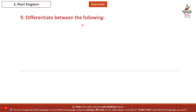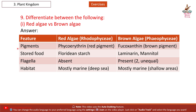Question 9, First: Red algae versus brown algae. Feature — Pigments: Red algae (Rhodophyceae) have phycoerythrin, a red pigment; Brown algae (Phaeophyceae) have fucoxanthin, a brown pigment. Stored food: Red algae — floridean starch; Brown algae — laminarin and mannitol. Flagella: Red algae — absent; Brown algae — present, 2 unequal. Habitat: Red algae — mostly marine, deep sea; Brown algae — mostly marine, shallow areas.